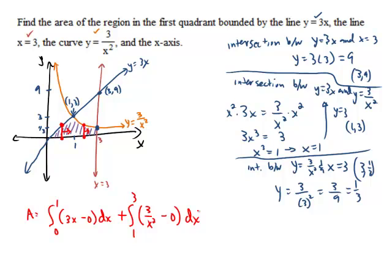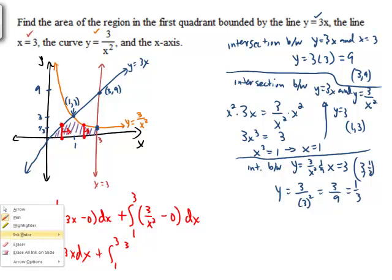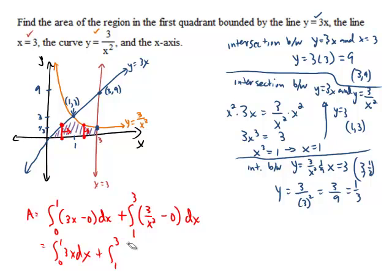Okay. And that would give us the area of that region. And so, we're just talking about 0 to 1, 3x dx. And 1 to 3, 3. You know what? Let's call it 3x to the negative 2. It will help us when it comes time to integrate, to call it 3x to the negative 2, so we don't get tempted to use some kind of a natural log or anything like that. Okay. So, we're going to get 3x squared over 2 from 0 to 1, and 3x to negative 1 over negative 1 from 1 to 3.